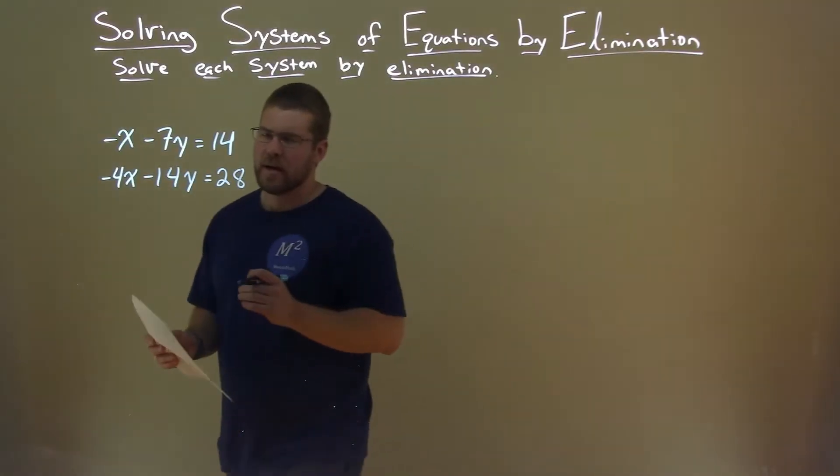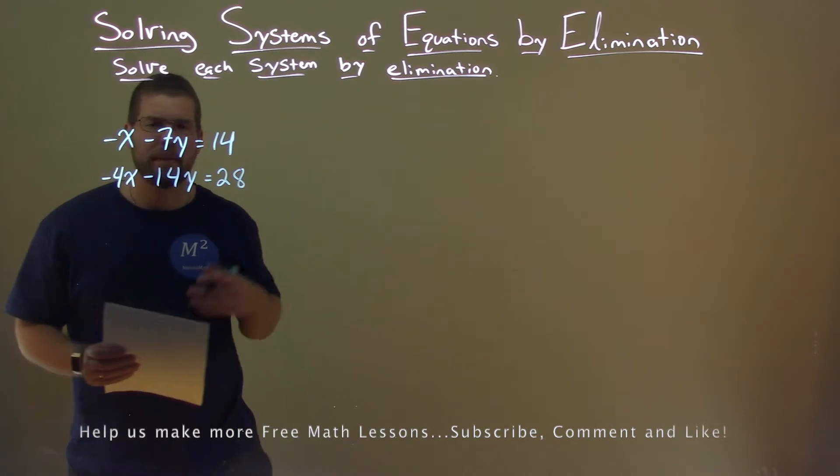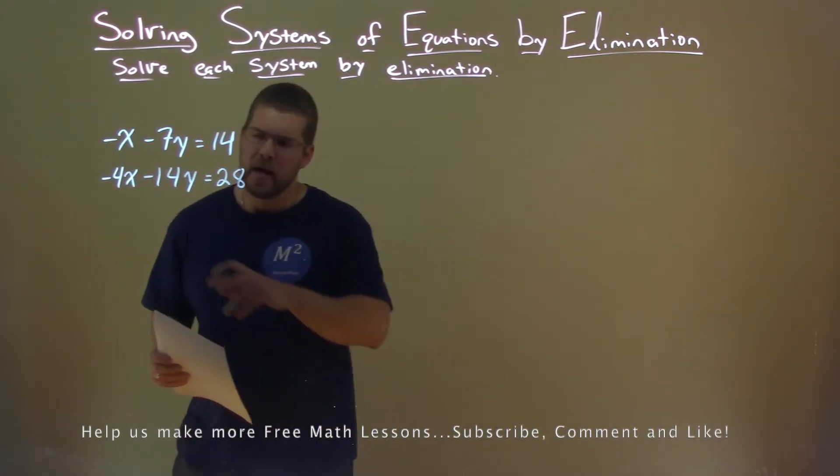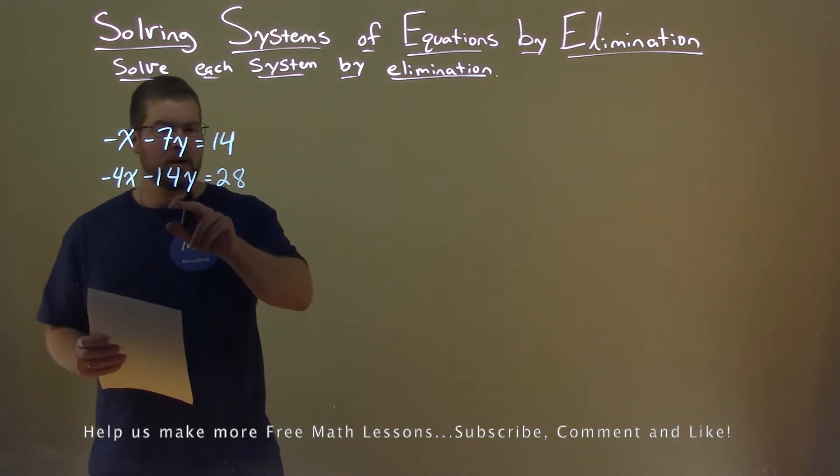We're going to solve the system by elimination and we're given negative x minus 7y equals 14, and negative 4x minus 14y equals 28.